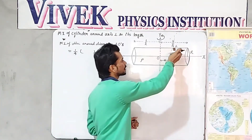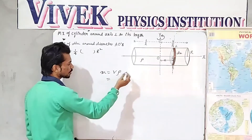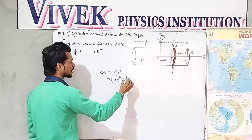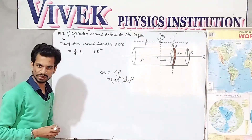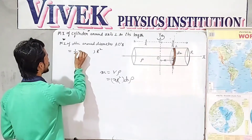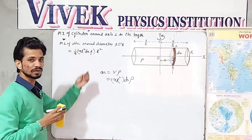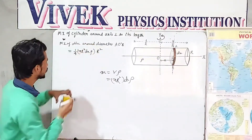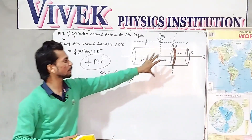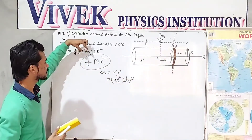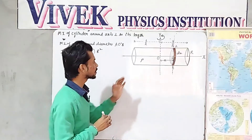Let's find the mass of this disk. Say the width of the disk is dx. Then mass equals volume times density. The volume of the disk is π R² × dx (area times width), and multiplying by density ρ gives the mass of the disk as π R² dx ρ. So the MI of the disk around its diameter is (1/4) × π R² dx ρ × R², which is in the form (1/4)mR².